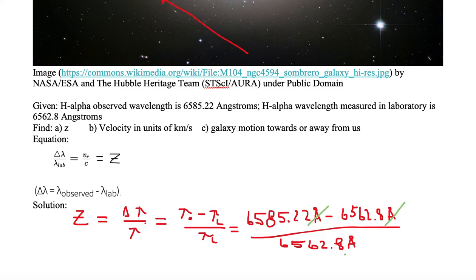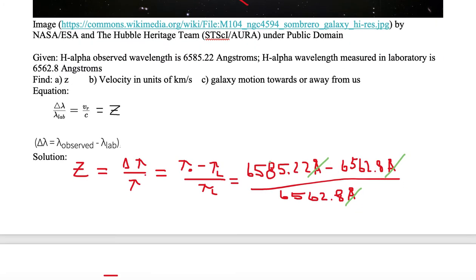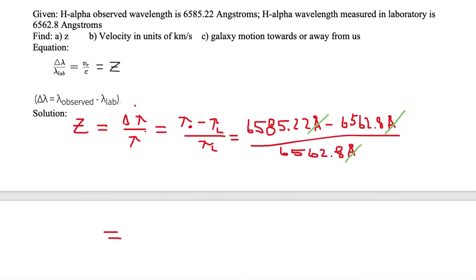Angstroms on the top divide with angstroms on the bottom, and all we're left with is a pure number — there are no units remaining. Redshift does not have any units; it is a unitless number.